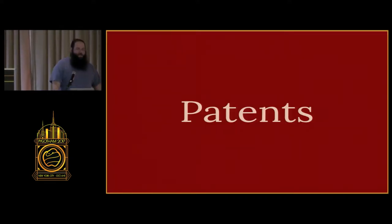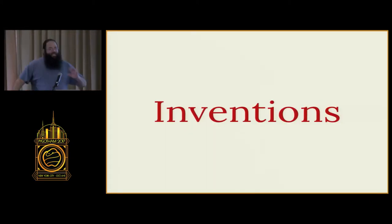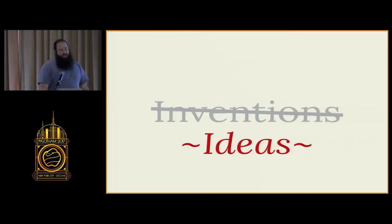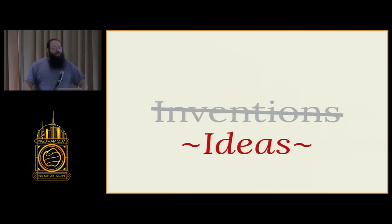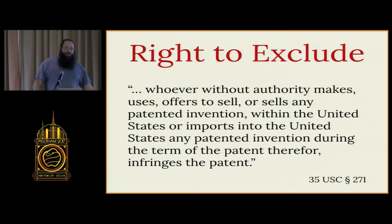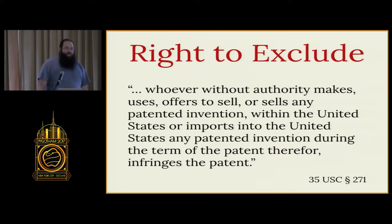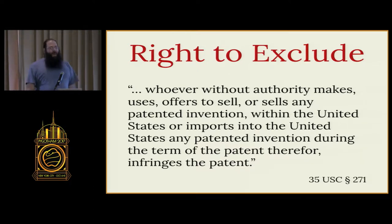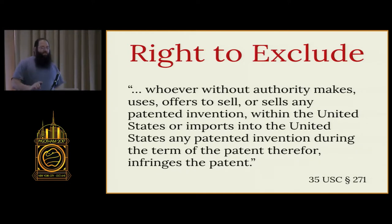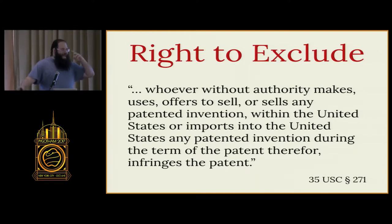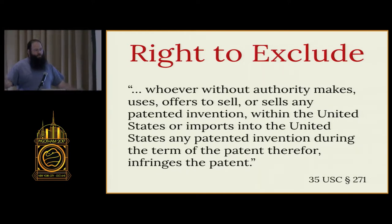On to the next major type of IP: patents. Whereas copyrights protect specific tangible works of art, patents protect inventions — roughly speaking, instead of specific tangible works of art, patents protect the entire concept of an invention. Like the exclusive rights you got with copyrights, patents also give you an exclusive right called the right to exclude. This means that the holder of a patent is allowed to prevent anyone else from using the invention described in the patent. Notably, this is only a negative right for others, not a positive right for you — even with a valid, granted patent, it might still be illegal or impossible to create your invention.